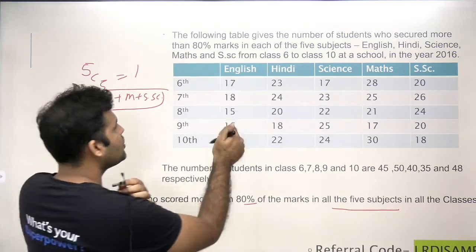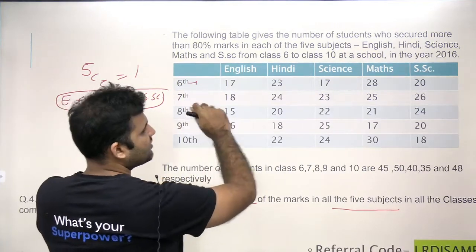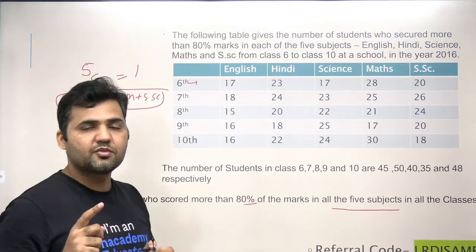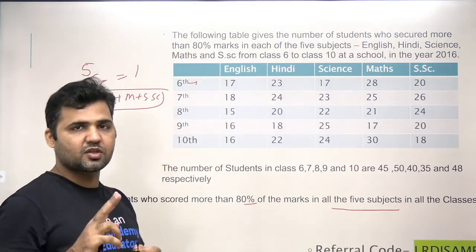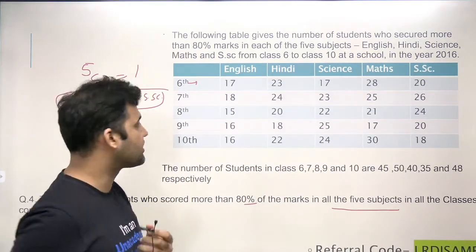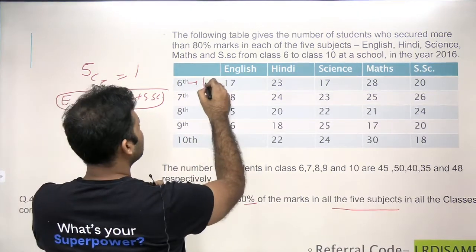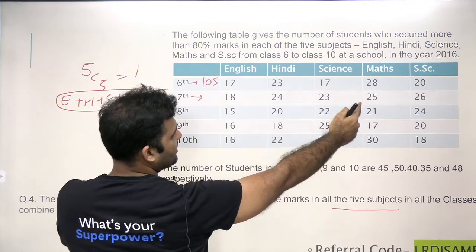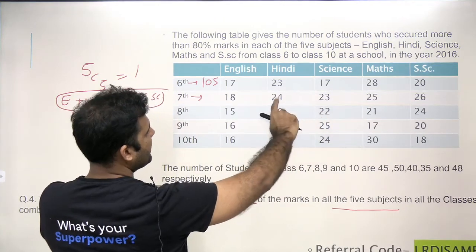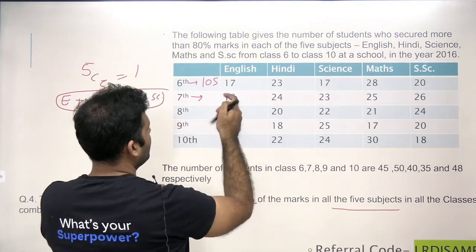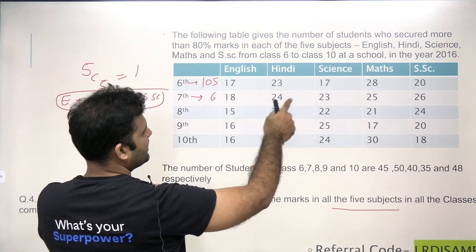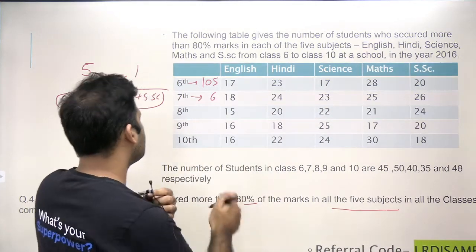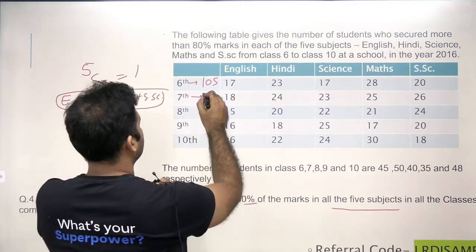Now, we know the individual number of prizes — here prizes mean students getting more than 80% in one subject equals one prize, two subjects equals two prizes. For 6th class, the total number of prizes distributed is 105. For 7th class, adding up: 6+5=11, plus 14, plus 18, plus 26, and the remaining values 2, 4, 6, 8, 10, 12, and 9 and 11 — totalling 116 prizes.